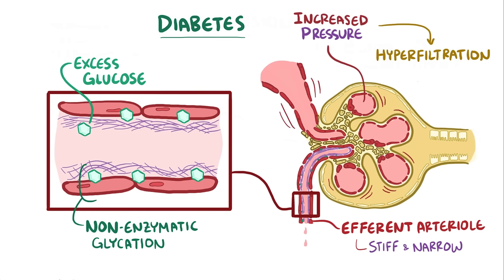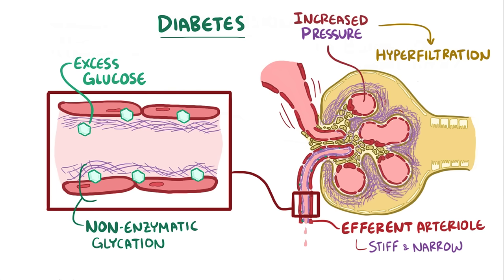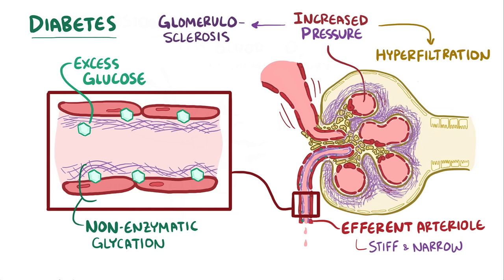In response to this high pressure state, the supportive mesangial cells secrete more and more structural matrix, which expands the size of the glomerulus. Over many years, this process of glomerulosclerosis once again diminishes the nephron's ability to filter the blood and can lead to chronic kidney disease.